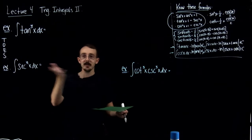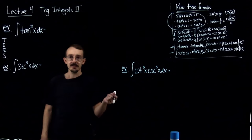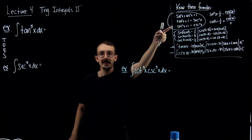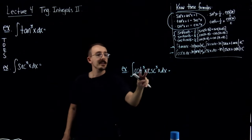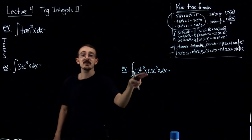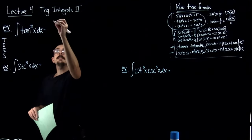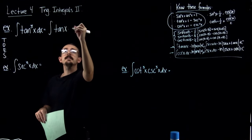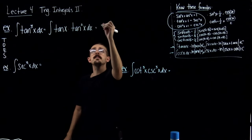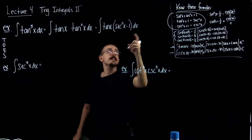Welcome back. Here I have three more integrals to finish this lecture. I'd suggest you stop the video and give them a try first. The first is interesting because I've given you the cotangent cosecant pair. Now let's get started. Here's tangent to the third power. I'm going to rewrite this as tangent x times tangent squared x dx, and then substitute: tangent squared equals secant squared minus 1, so this becomes tangent x times secant squared x minus 1, dx.